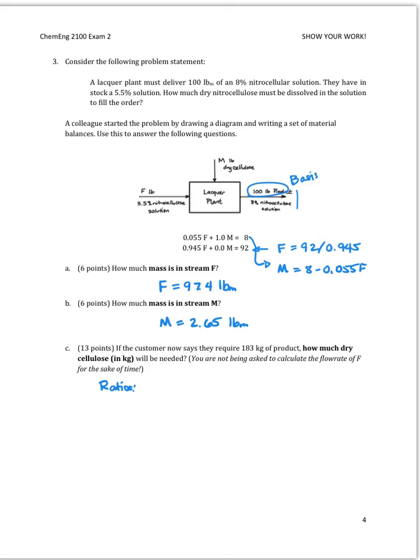So what that says is that X kilograms of dry cellulose will produce 183 kilograms of product in the same way that 2.65 pounds mass of dry cellulose produced 100 pounds mass of product.